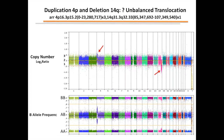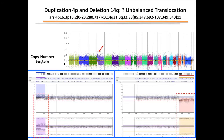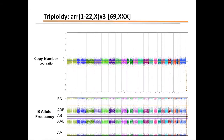Unbalanced translocations resulting from parents who carry a balanced form of a translocation are also seen quite frequently. This is an example of a potential unbalanced translocation between chromosomes 4p and 14q, raising the possibility of one of the parents having a balanced form of this rearrangement, which increases the risk of similar unfortunate events in future pregnancies. This is a zoomed-in view of the duplication of terminal 4p and the deletion of terminal 14q. The segments are quite large in size and likely contributed significantly to the pregnancy loss.